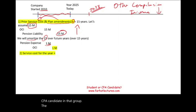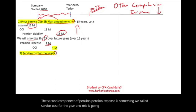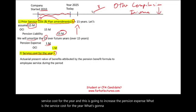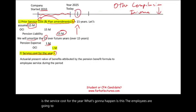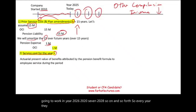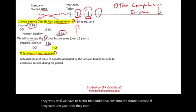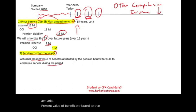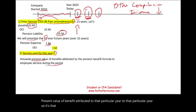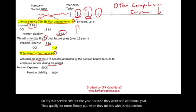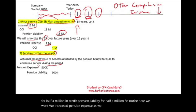The second component of pension expense is service cost for the year, and this increases pension expense. Each year employees work — 2026, 2027, 2028, and so on — we have to factor in the additional cost into the future, because every additional year they work they qualify for more. This is the actuarial present value of benefit attributed to that particular year. When we record it, we debit pension expense for, say, $500,000 and credit pension liability for $500,000.